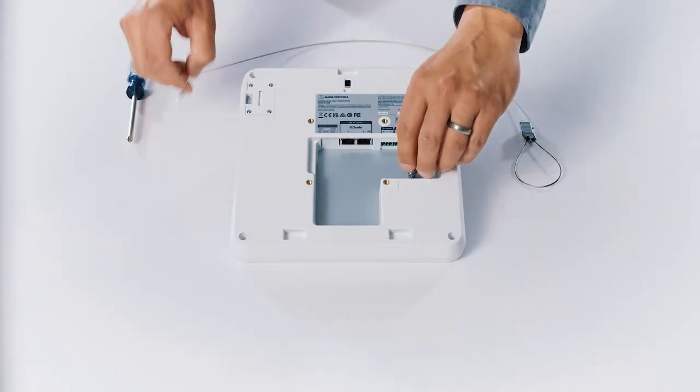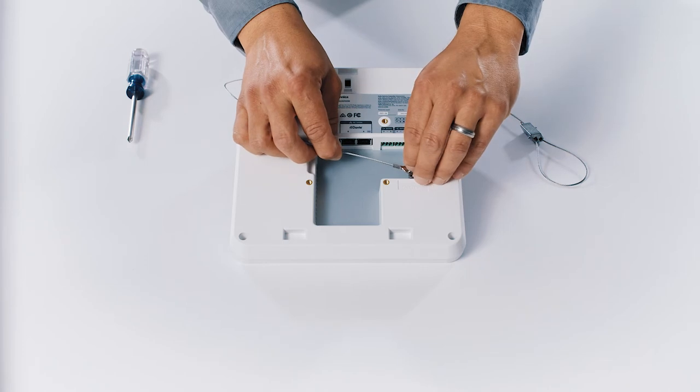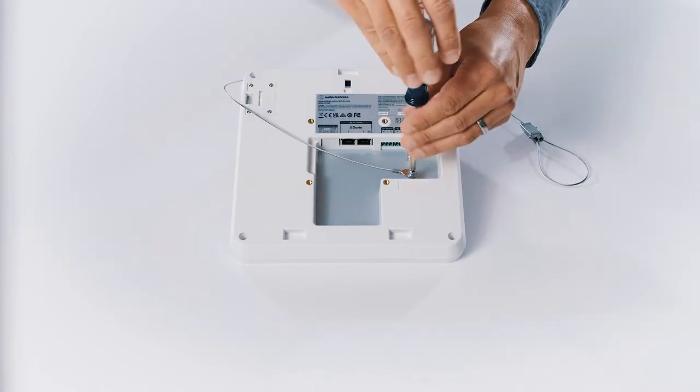Use the seismic cable to secure the flush mount adapter to a structural part of the building not connected to the ceiling grid.